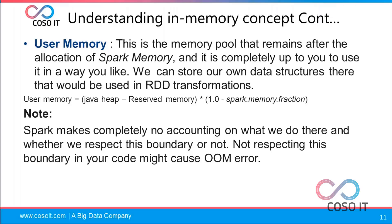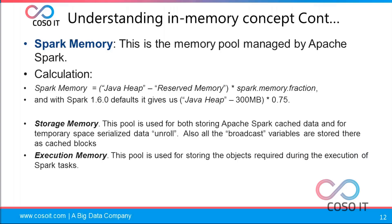User memory is a memory pool remaining after Spark memory allocation — it's completely up to you how to use it. You can store your own data structures locally. For example, in a Spark shell you might store a data structure in local RAM, which goes into user memory. The formula is: Java heap minus reserved memory, multiplied by (1.0 minus spark.memory.fraction). You need to keep these parameters in mind, otherwise you will get out-of-memory errors.